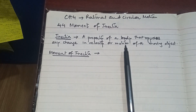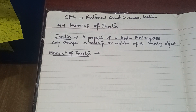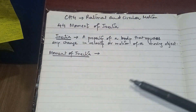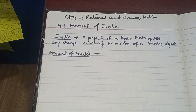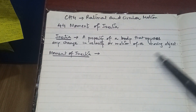Inertia is basically a property of a body which opposes any change in the velocity and motion of a moving object. For example, you have a seatbelt and a car is going. If you hit a speed breaker and brake, you are going to lurch forward — that is because of inertia. Inertia means that you continue in the same motion.